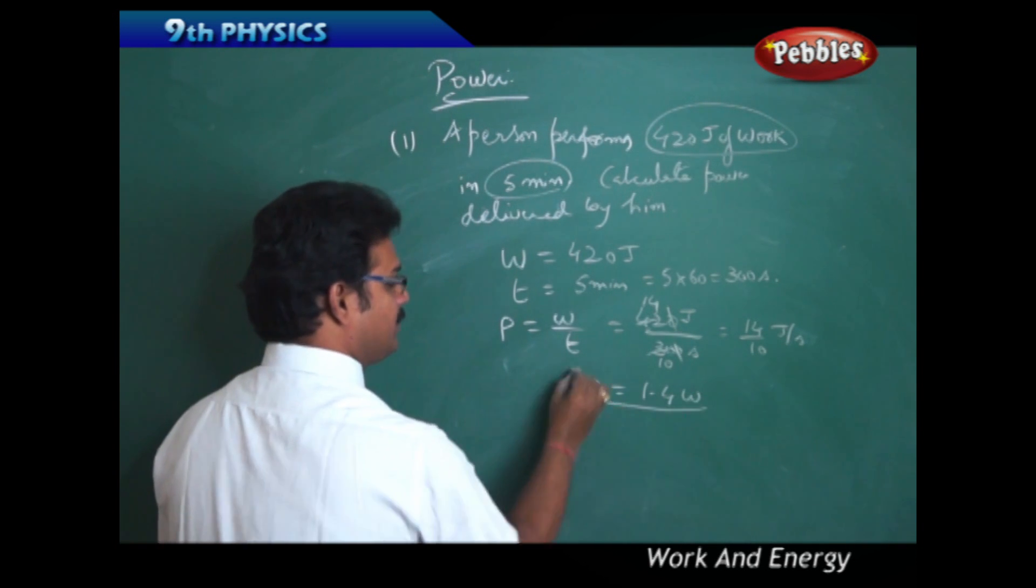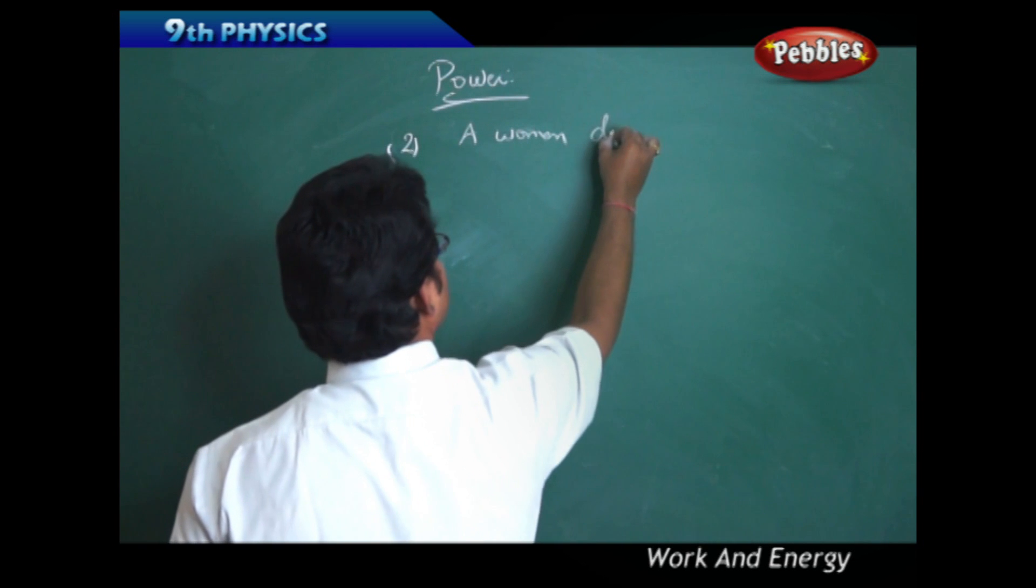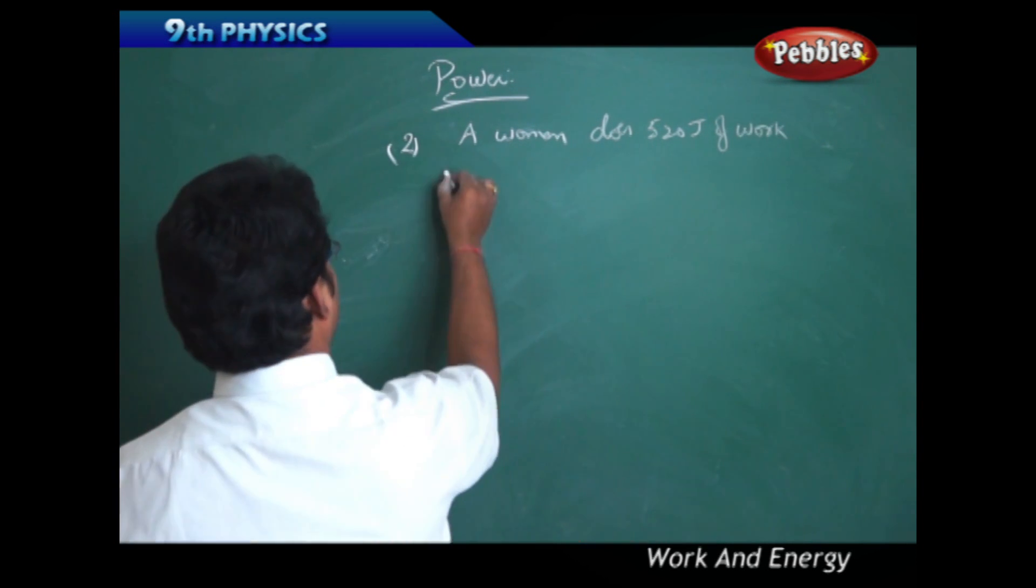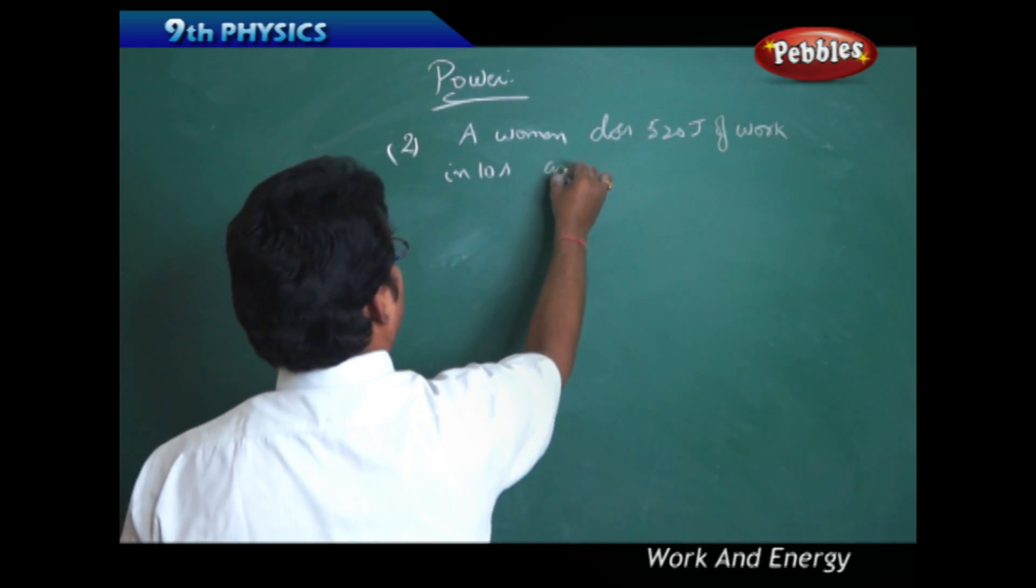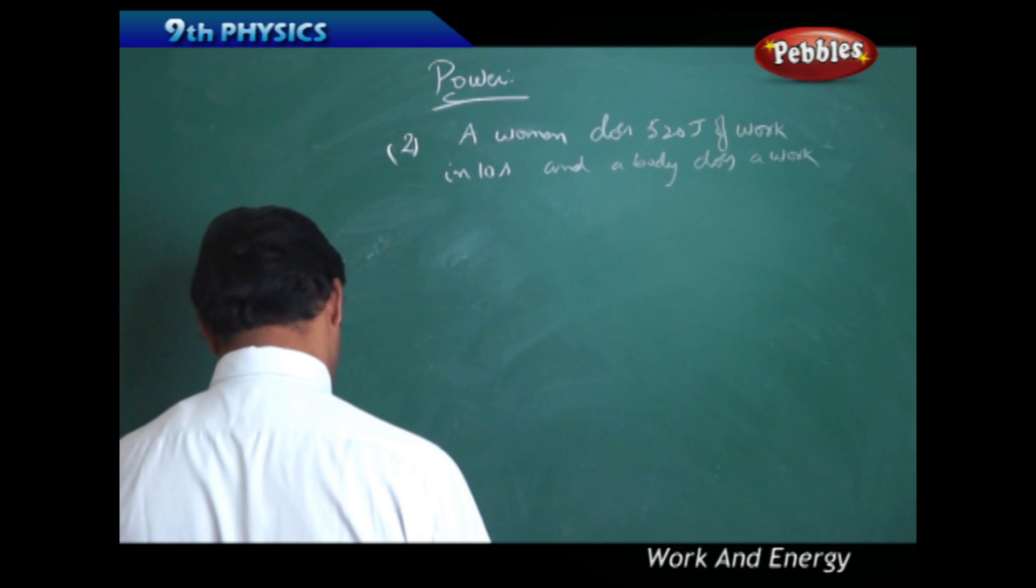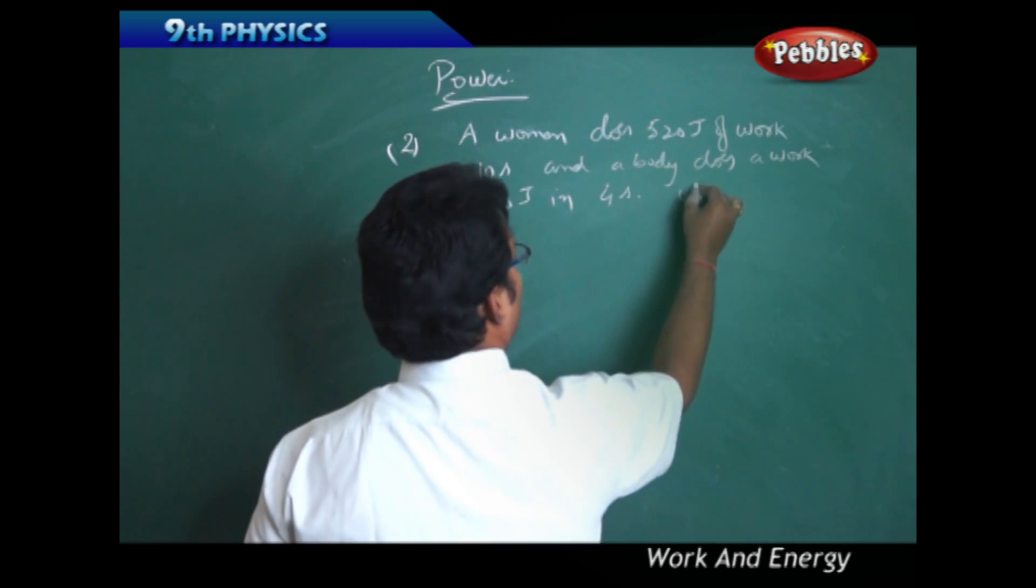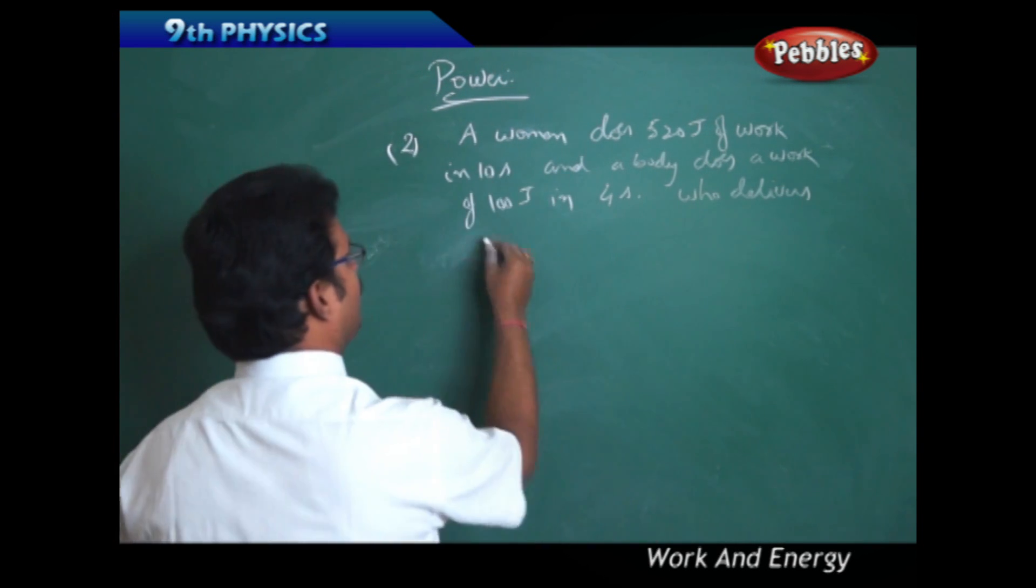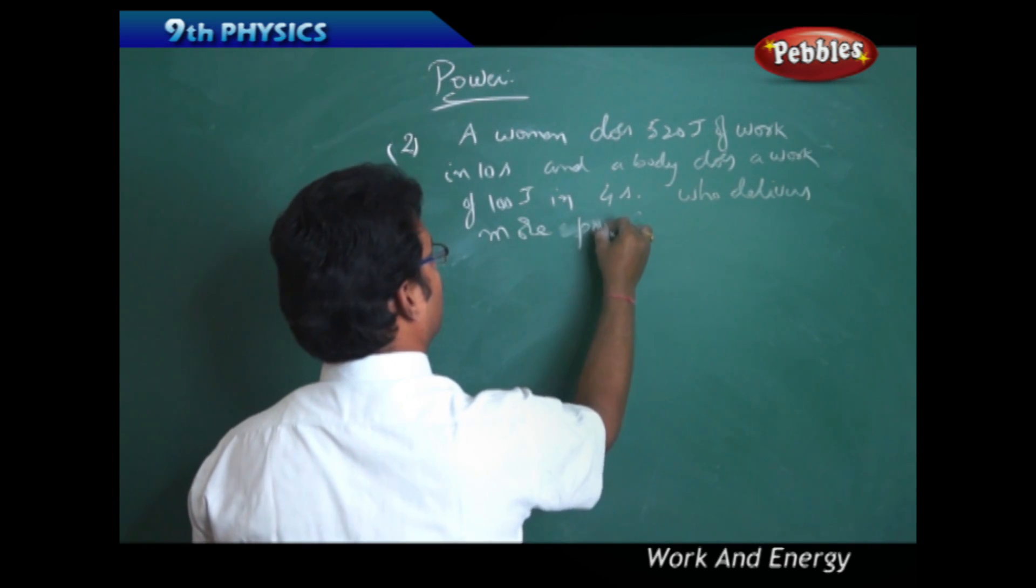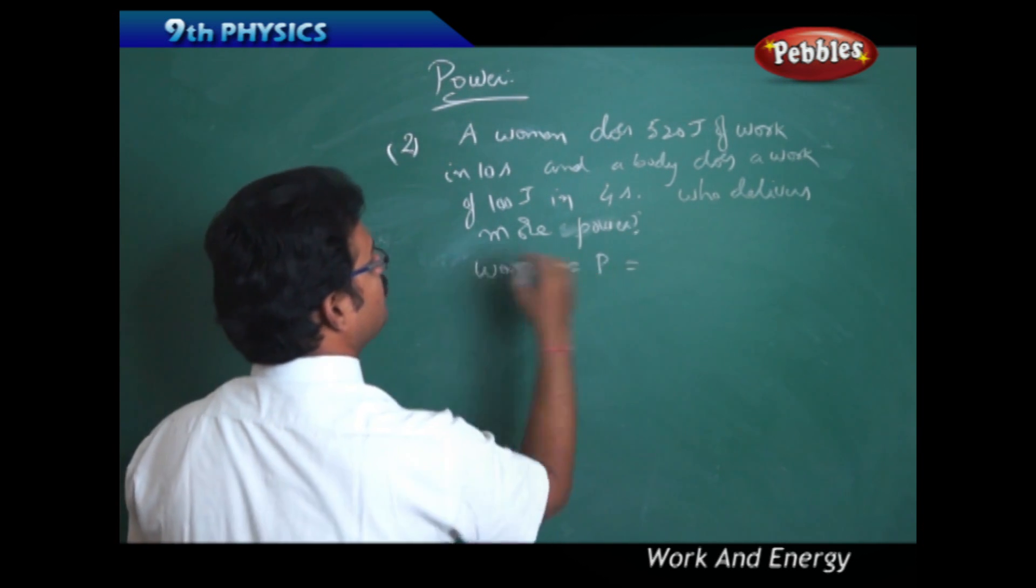Numerical problem 2: A woman does 520 joules of work in 10 seconds, and a boy does 100 joules of work in 4 seconds. Who delivers more power? First, the woman's case: power P = work by time = 520 joules / 10 seconds = 52 watts.